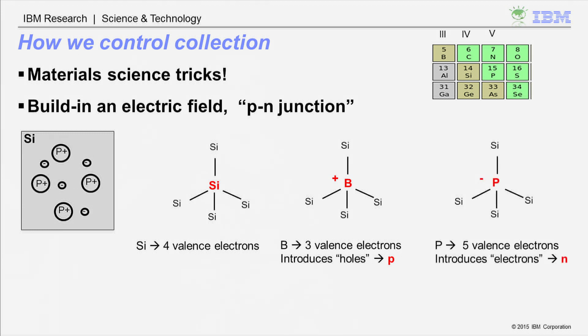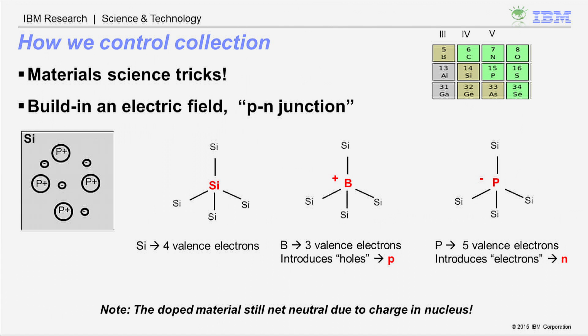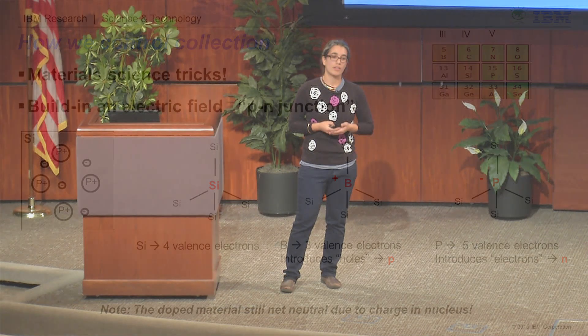Similarly, if you replace some of the silicon with phosphorus, which sits to the right of silicon and has one extra valence electron relative to silicon, in addition to satisfying the full octet, it has an extra valence electron that can delocalize throughout the structure, creating what's called an N-type material for negative type. An important point is that these materials are not charged — even though we've created delocalized carriers, the material isn't charged because of the difference in nuclear charge. Phosphorus contains one more valence electron but also one more proton in its nucleus, so phosphorus-doped silicon isn't charged.